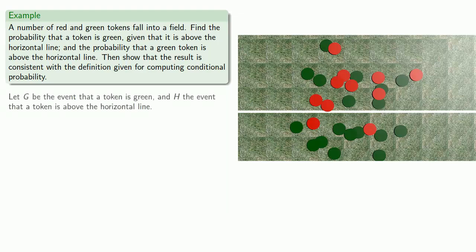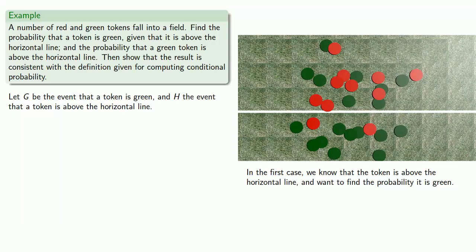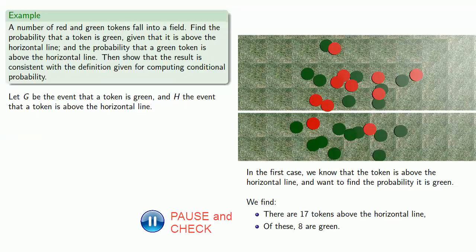Let G be the event that a token is green and H the event that a token is above the horizontal line. In the first case, we know that the token is above the horizontal line and we want to find the probability it is green. Looking at the picture, we find there are 17 tokens above the horizontal line, and of these, 8 are green. So the probability that a token is green given that it's above the horizontal line is 8 out of 17.